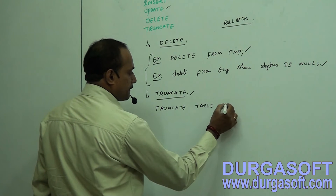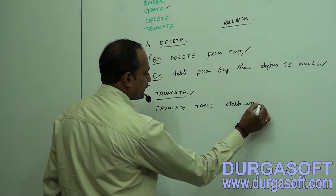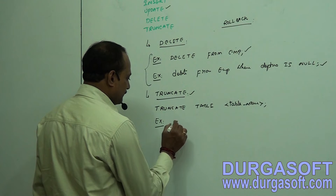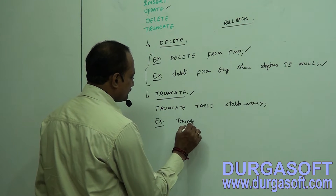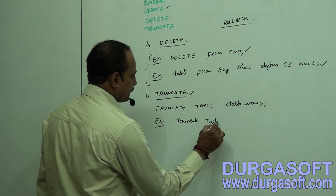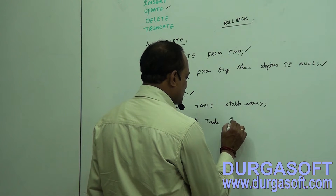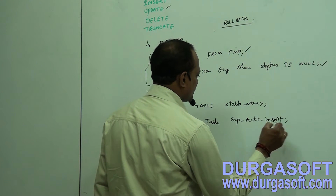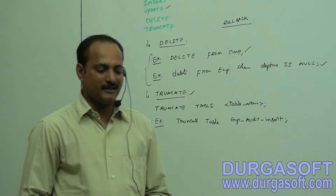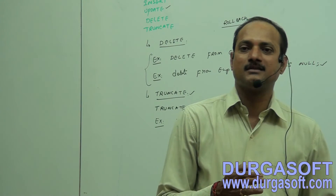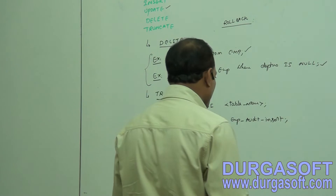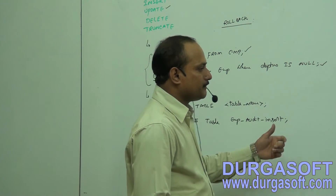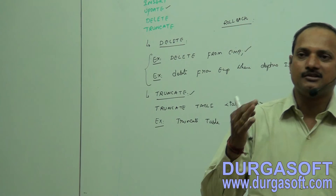The syntax is: TRUNCATE TABLE followed by the table name. Once the data is truncated from the table, you cannot get back that deleted data. For example: TRUNCATE TABLE emp_audit_insert — this table maintains new customers for the business day. Once the business day is over, you truncate it so that the next business day only the current day's new customers' information is maintained.